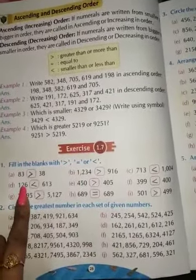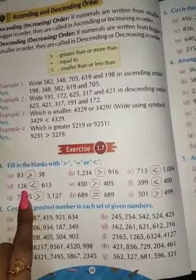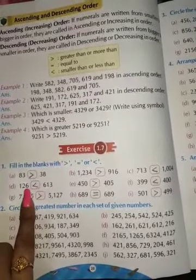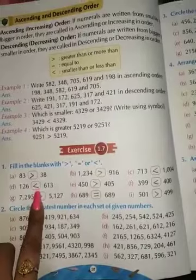D, 126 blanks with 613. So I know that students, 613 is bigger than 126. So greater than sign is here.